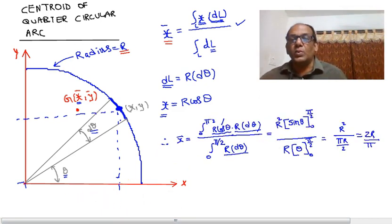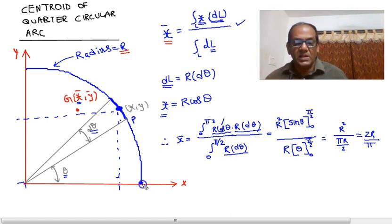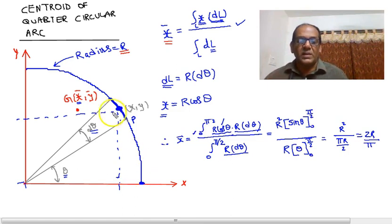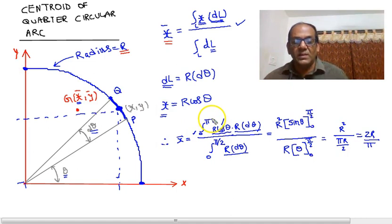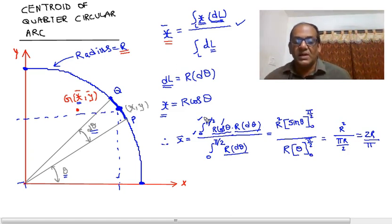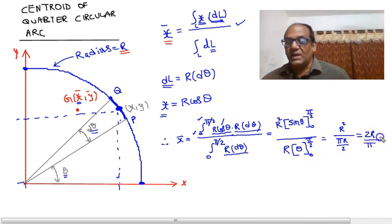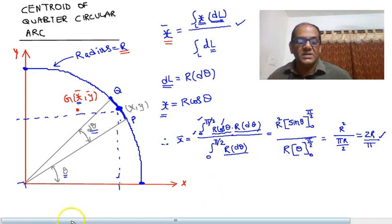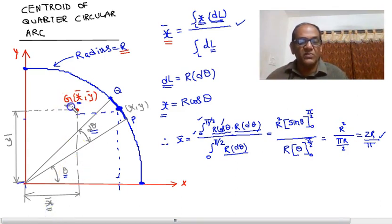The point p of the elemental arc starts at the x-axis where theta is 0, and when we span the entire arc, it comes to a point on the y-axis where the angle is pi over 2. So the integral limits are 0 to pi over 2. We simplify this integral: the integral of cos(theta) is sin(theta), evaluated between pi/2 and 0, and the integral of d-theta is theta between pi/2 and 0. We get x-bar = 2r over pi.